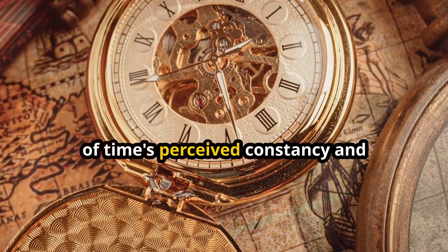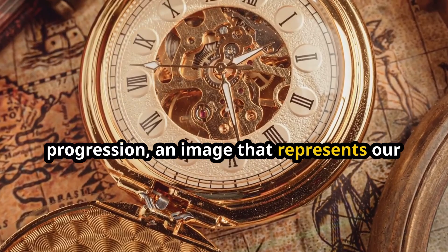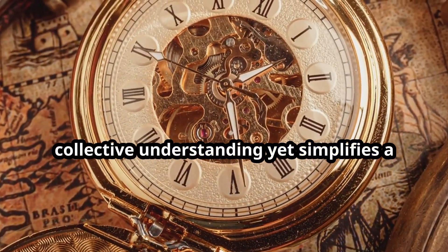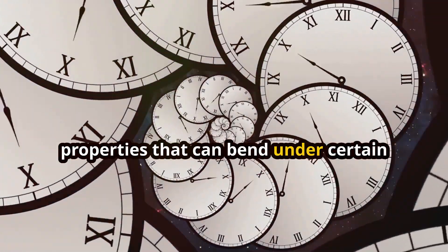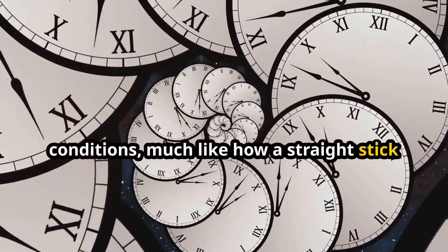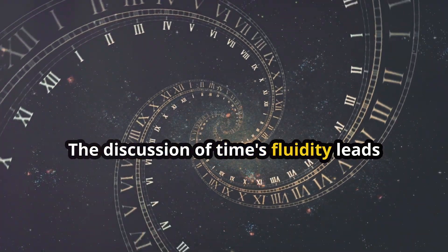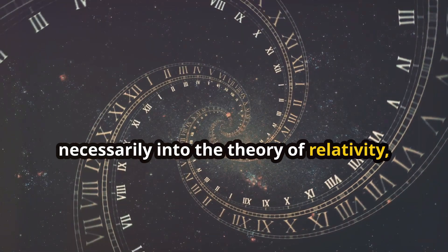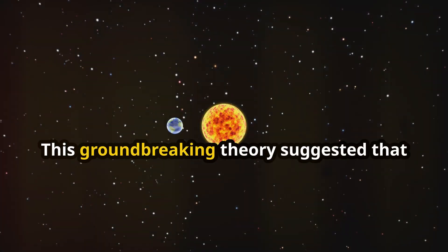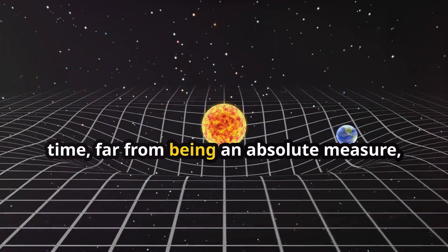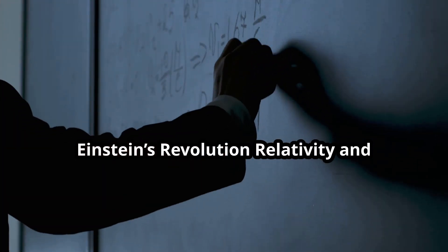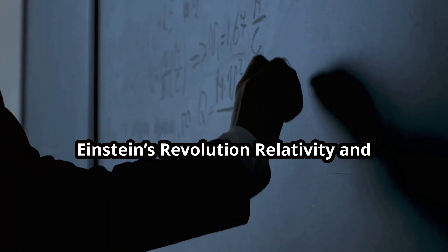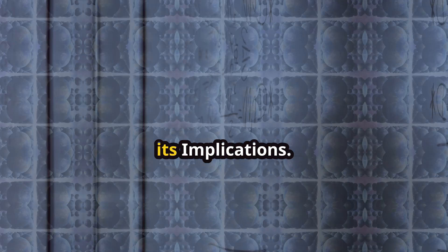The traditional ticking clock is a symbol of time's perceived constancy and progression, an image that represents our collective understanding yet simplifies a much more complex concept. Time, according to physics, has properties that can bend under certain conditions, much like how a straight stick appears bent in water. The discussion of time's fluidity leads necessarily into the theory of relativity introduced by Albert Einstein. This groundbreaking theory suggested that time, far from being an absolute measure, is relative depending on the speed at which an observer is traveling.